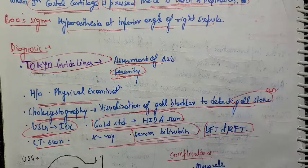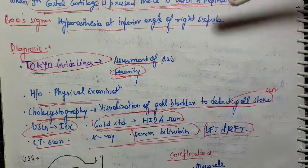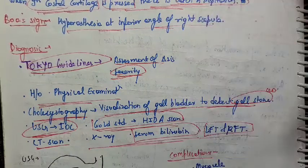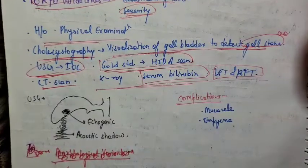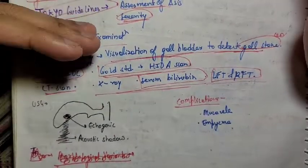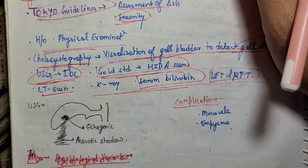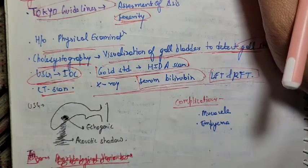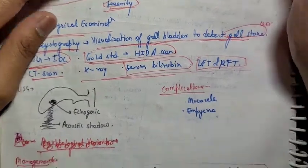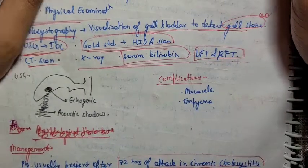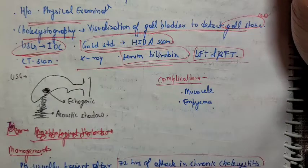Additional investigations include CT scan, X-ray, serum bilirubin, and LFT (liver function test). On the USG report, you will see a characteristic acoustic shadow, which is indicative of gallstones.